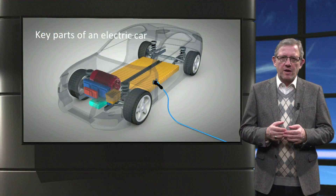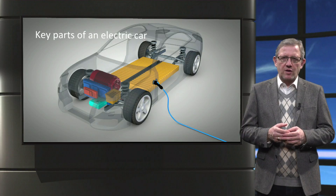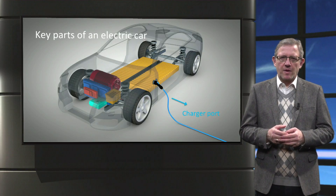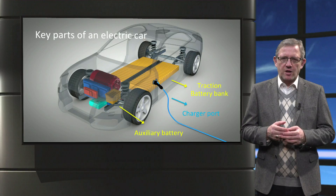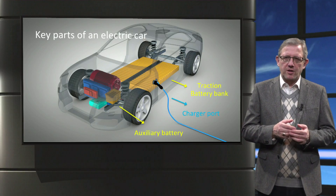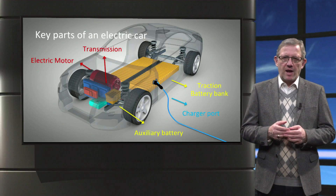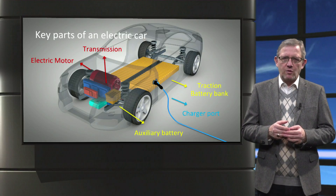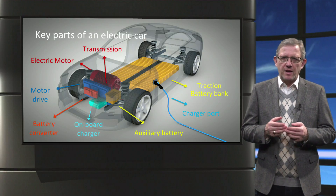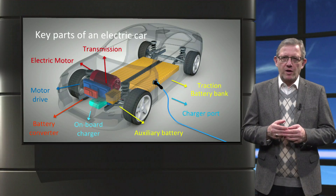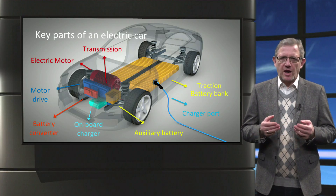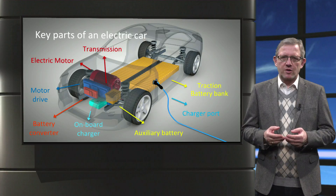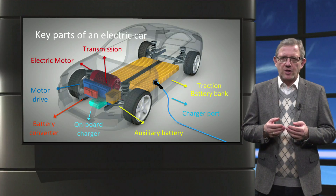In this figure you can see the key parts of an electric car. First we have a charging port with the connector and cable. We have the high voltage traction battery and the low voltage auxiliary battery. We have an electric motor and a transmission system which are used for propulsion. And finally there are several power electronic converters that are used for battery charging, for driving the motors and for regenerative braking.